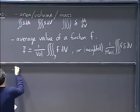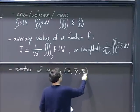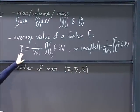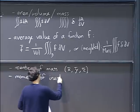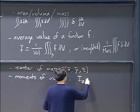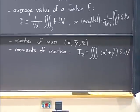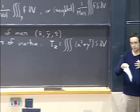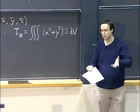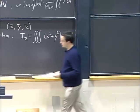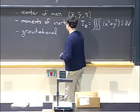Other applications include center of mass — just the weighted average values of the coordinates x̄, ȳ, z̄. There are also moments of inertia: for example, the moment of inertia about the z-axis is ∭(x² + y²)·(density) dV, or in 2D the same formula with dA, called the polar moment of inertia. We've also seen gravitational attraction in space, which I'll let you look up in your notes — it's just one formula to remember.